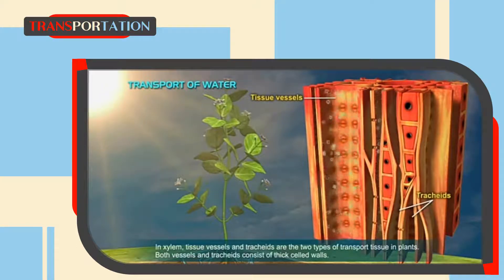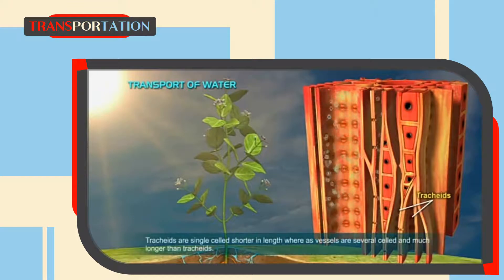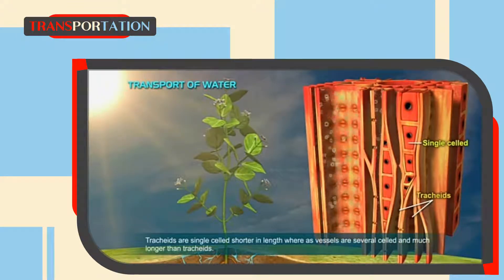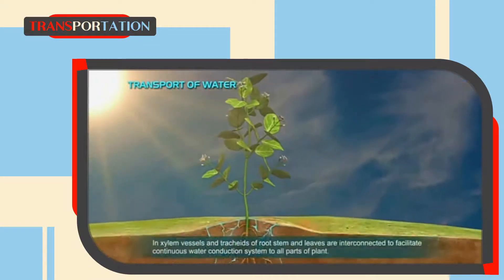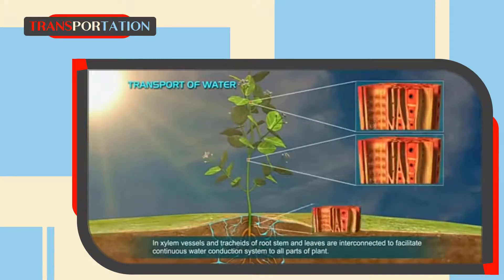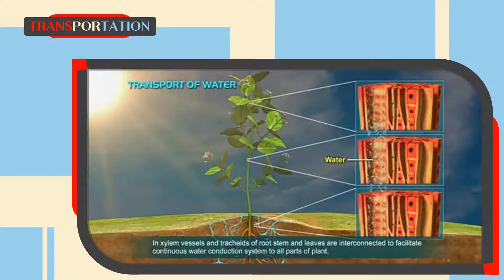Both vessels and tracheids consist of thick cell walls. Tracheids are single-celled and shorter in length, whereas vessels are several-celled and much longer than tracheids. In xylem vessels, the tracheids of root, stem, and leaves are interconnected to facilitate a continuous water conduction system to all parts of the plant.